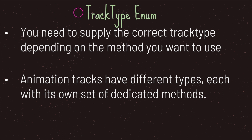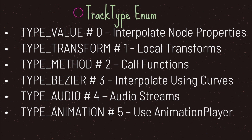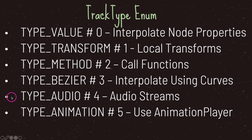The most important thing to understand about the animation resource class is the track type enum. It's important because you need to supply the correct track type depending on the methods you want to use. The animation resource class provides six different track types: TYPE_VALUE, TYPE_TRANSFORM, TYPE_METHOD, TYPE_BEZIER, TYPE_AUDIO, and TYPE_ANIMATION. The one you'll use most often is TYPE_VALUE for interpolating node properties, and the second most important is TYPE_AUDIO for handling audio streams.